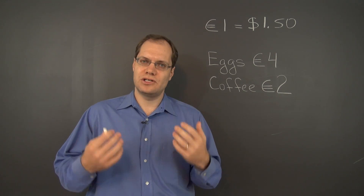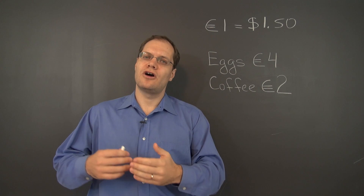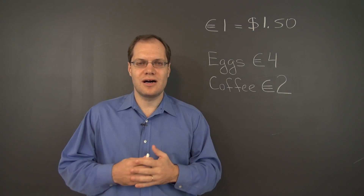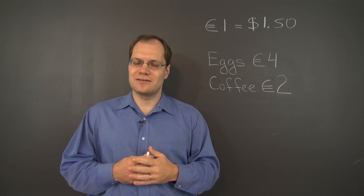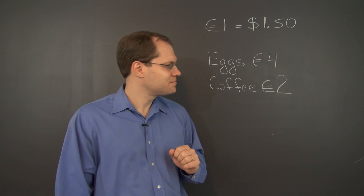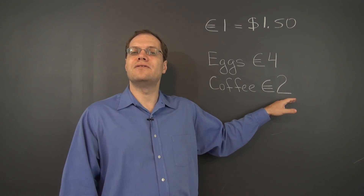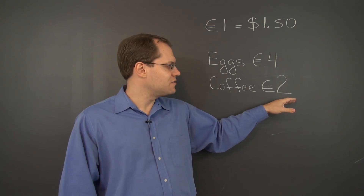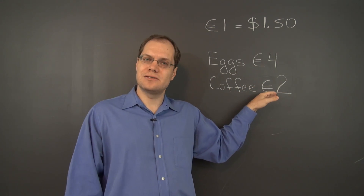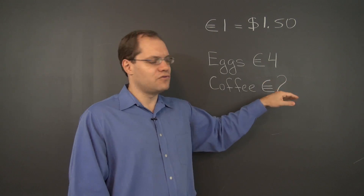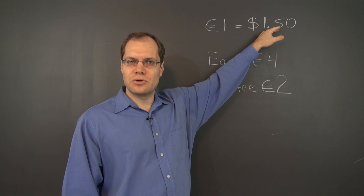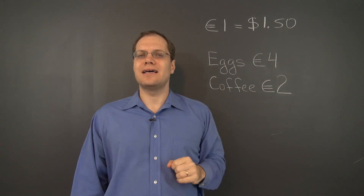The inputs are the amounts in euros, the outputs are the amounts in dollars. Now if you want to find out the total cost of your breakfast in dollars, there are actually two ways to carry out the transformation. You can first find out the total cost of your breakfast in euros, and if you have one order of eggs and one coffee, that would be six euros, and you would then convert the six euros to dollars, and you would discover that the total cost of your breakfast is nine dollars.